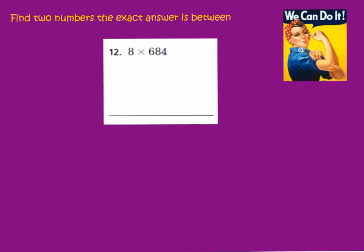All right, mathematicians, let's look at number 12. Number 12 is asking us to find two numbers that the exact answer is between. So just like before, we're going to look at 8 times 684. And we need two estimates for this one. So let's look at our 684. And we know that 684 is between 600, if we would round down, and 700.